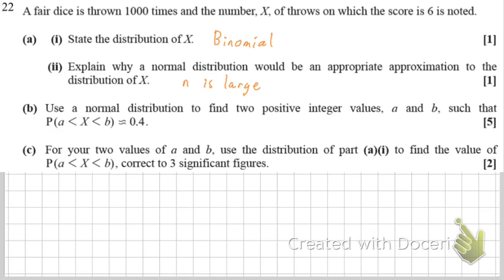Explain why normal distribution would be appropriate to approximate it. N is large. In the old days in the old syllabus you used to have to write that NP was greater than five and another condition as well. You don't need that anymore. It's one mark and you just write N is large. That's when we can use the normal approximation.